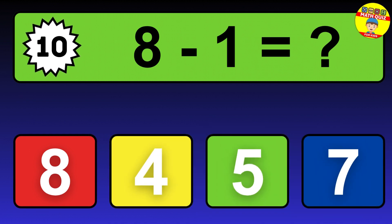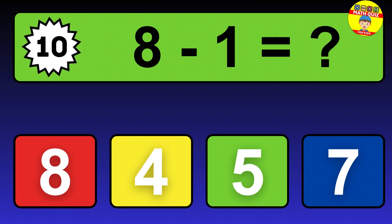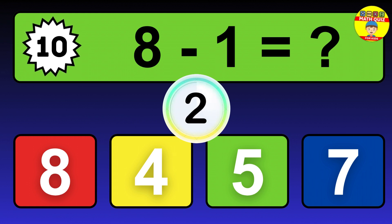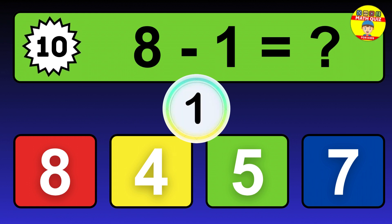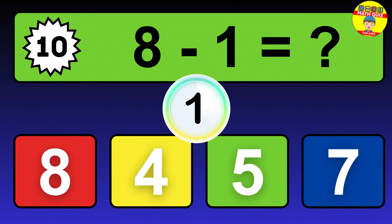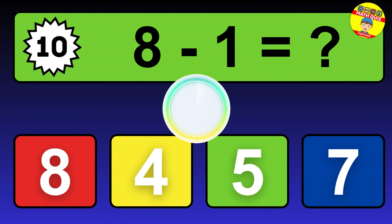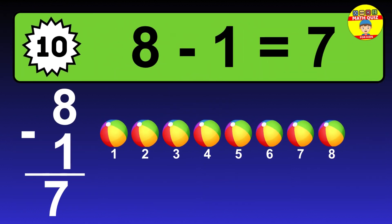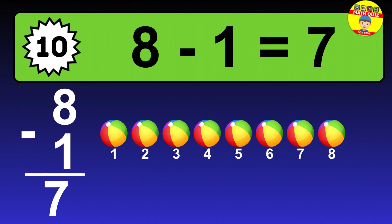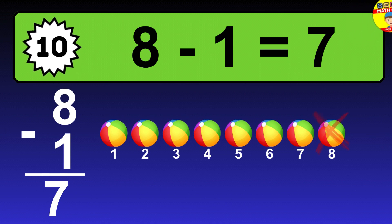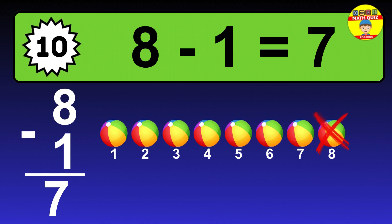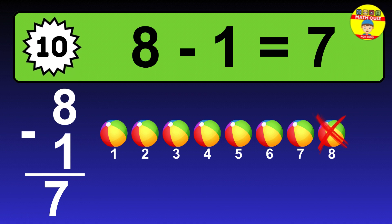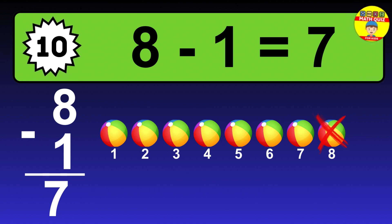Question 10. 8 minus 1 equals what? The answer is 8 minus 1 is 7. Let's count it: 1, 2, 3, 4, 5, 6, 7.